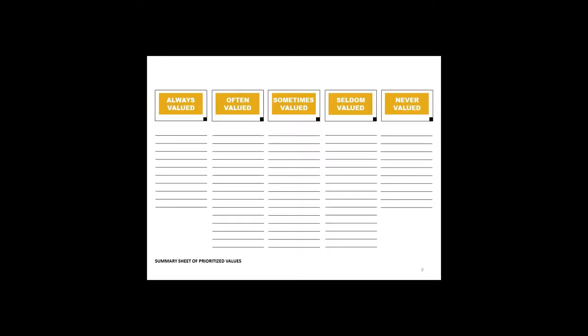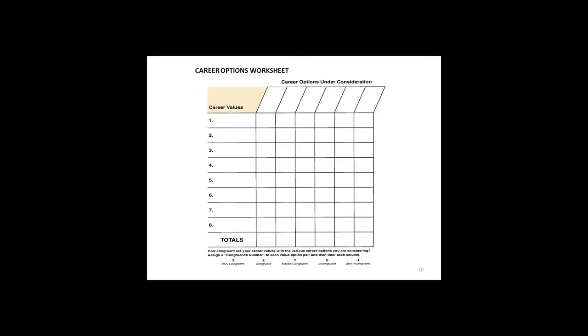After they've sorted the cards into those categories, I look at the ones in the Always Valued area and ask them to write all the values down on a worksheet. Then I focus on the eight highest values and have them put those on the Career Options worksheet, which is a matrix. On the vertical dimension I ask them to list their eight highest values, and across the top on the horizontal dimension, I ask them to list five or six different career options that they have.